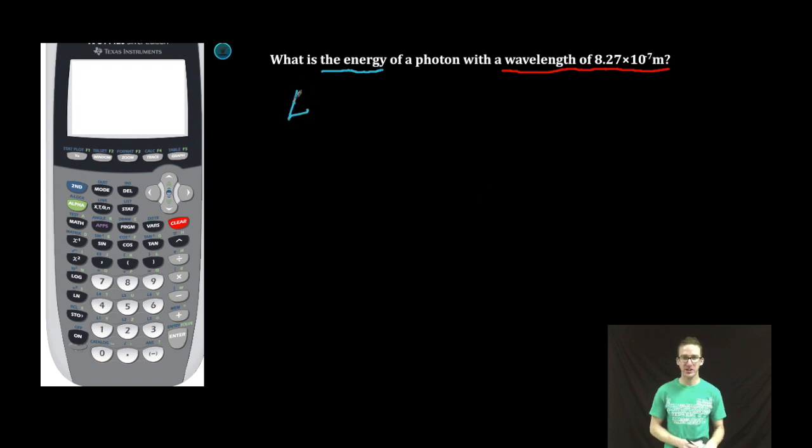A little trickier here. Energy of a photon is equal to Planck's constant times frequency. There's no wavelength in this equation.